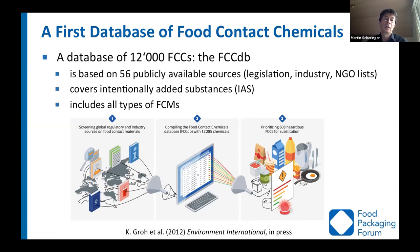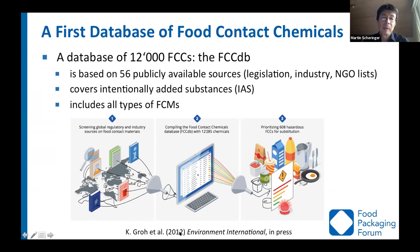The team also prioritized substances known to have hazardous properties, highlighting them as priorities for substitution. This work was published as a scientific publication by Groh et al. in 2021 in Environment International. Importantly, this database includes only intentionally added substances used in the synthesis of food contact materials — it does not include the non-intentionally added substances mentioned earlier. So there are more chemicals that may matter.